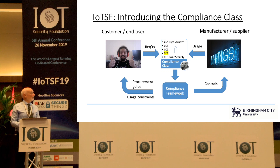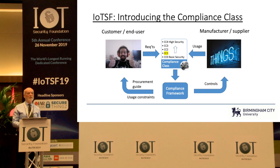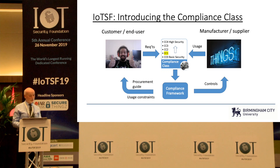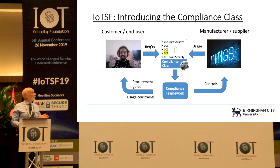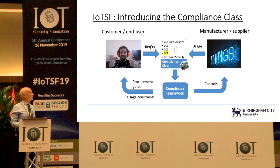Compliance class zero corresponds to a basic level of security, and we're seeing increasingly a consensus about what that basic hygiene factor in IoT ought to be. Rising from compliance class zero, there are four additional higher classes expressing the degree of security required. The work I'm involved in is essentially to provide actionable, accessible advice for these classes of stakeholder in determining that compliance class.